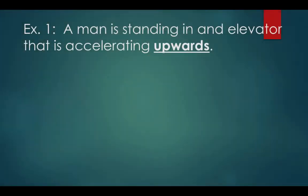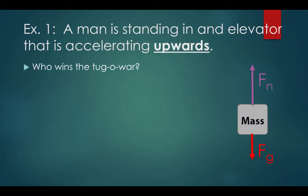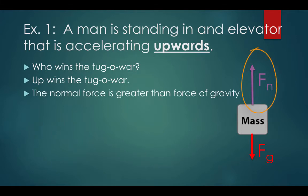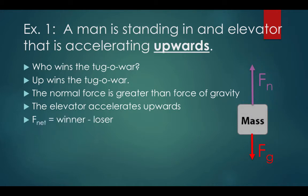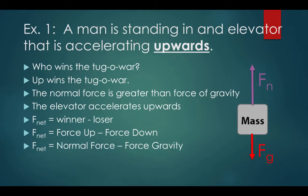Example number one: a man is standing in an elevator that is accelerating upwards. Here's a free body diagram illustrating this situation. Who wins the tug-of-war? Up wins the tug-of-war — the normal force is greater than the force of gravity, so the elevator accelerates upwards. Fnet equals winner minus loser, which is force up minus force down. Fnet equals normal force minus force of gravity, written as Fnet equals Fn minus Fg.